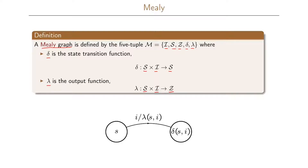The Mealy graph is written in the following way. We have a state S, and when we are in state S and have input I, we give the output determined by the lambda function which takes state S and I as input, and we go to a new state. The new state is determined by our function delta, which also takes state S and input I.